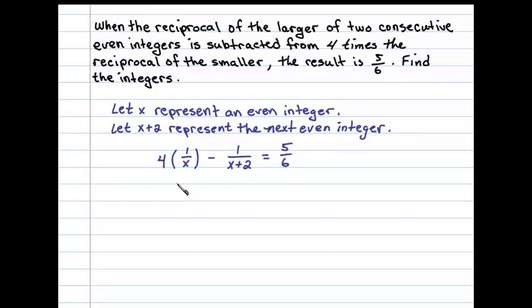This is our setup. We can write 4 times 1/x as 4/x. So we have 4/x minus 1/(x+2) equals 5/6. What we have here is a rational equation that can be solved by multiplying both sides by the LCD.